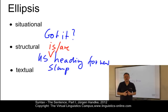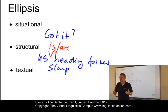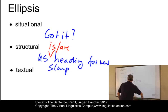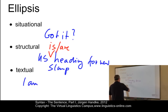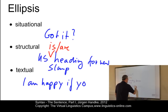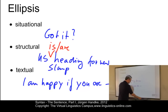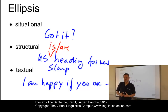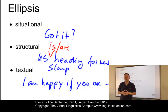And finally, we have textual ellipsis, where the interpretation depends on what is said or written in the linguistic context. An example could be: "I am happy if you are" — and of course we know that the missing element must be "happy." So ellipsis is really a special case of major sentence where the missing elements can be recovered relatively unambiguously.